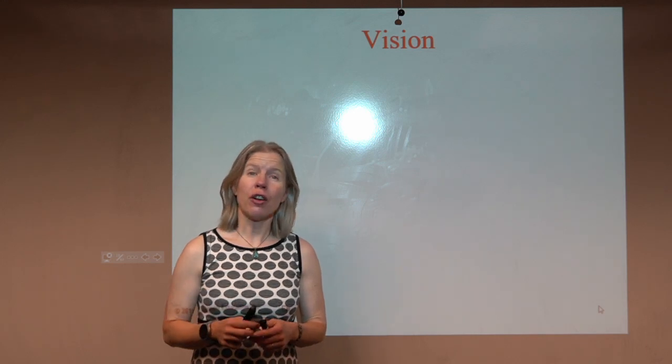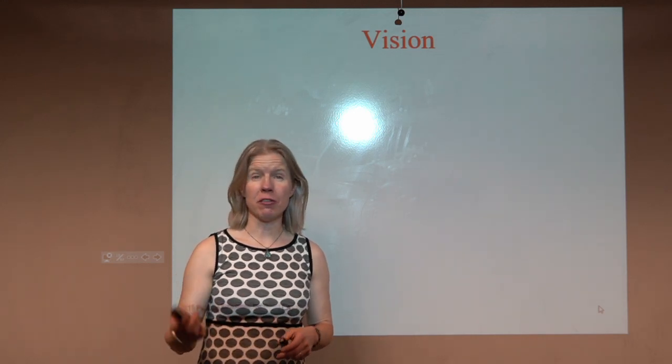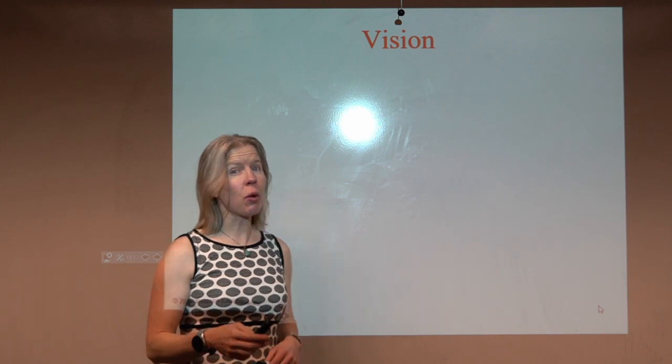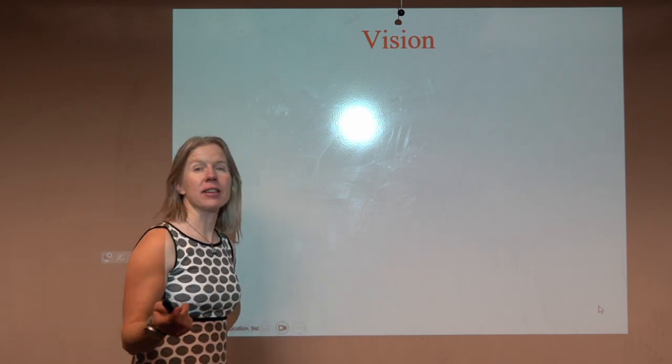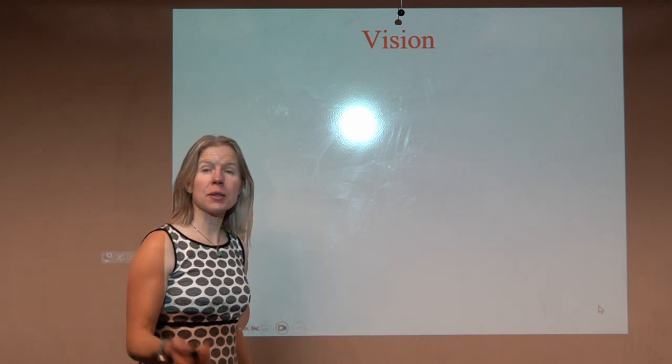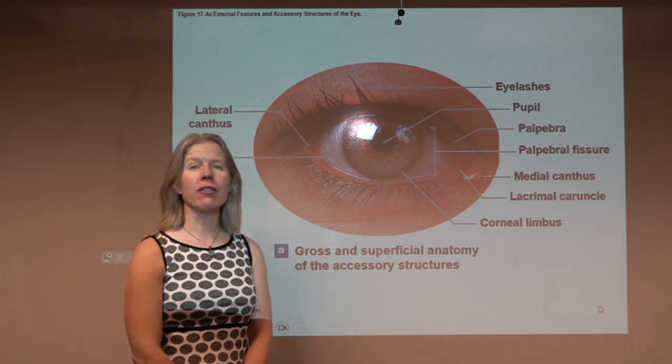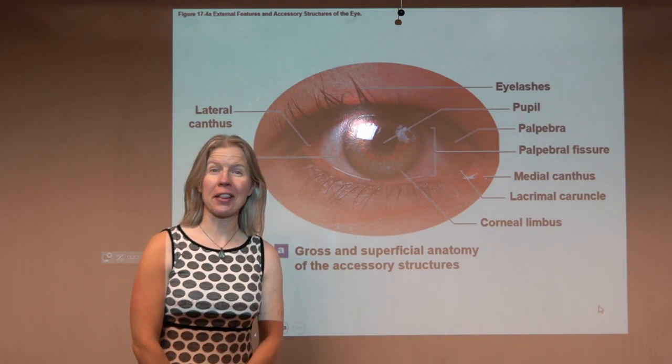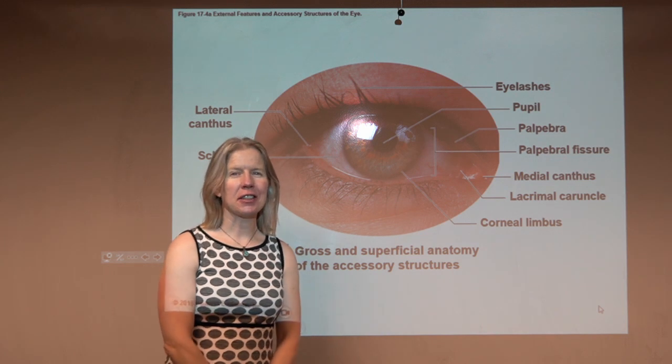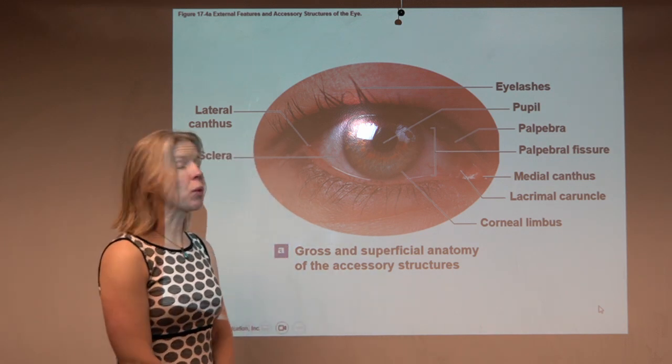Our third special sense is going to be vision, and vision gets a little more complicated than taste and smell. We actually have this very complicated organ, the eye, that's going to help us take information in about the outside world.